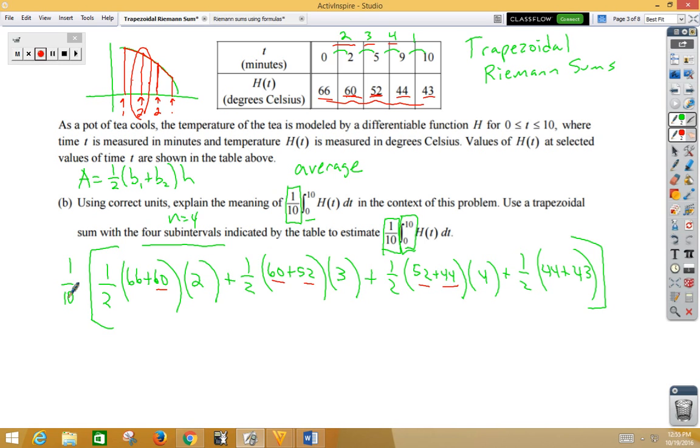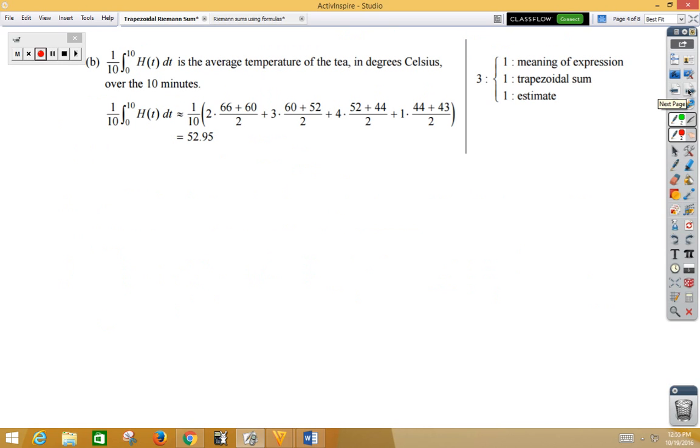Let's see how AP would have scored this one. Three points. The meaning of the expression: average temperature. We know it was an average because of the 1/10 of the T in degrees Celsius over the 10 minute period. A second point gets you for the trapezoidal Riemann sum. And our third point is the actual value.